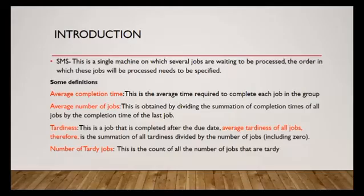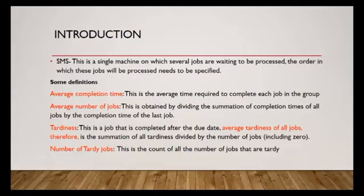Average tardiness of all jobs is the summation of all tardiness in terms of the number of days or weeks, depending on the units given in the table. This will then be divided by the number of jobs, including jobs that do not have tardiness. Then the number of tardy jobs is the count of all the jobs that are tardy — a head count of the number of jobs noted to have submitted late.